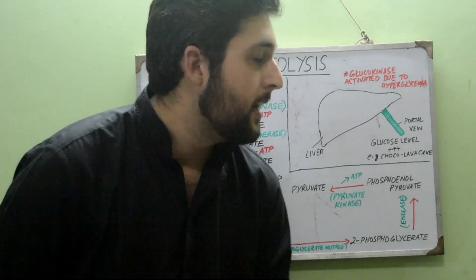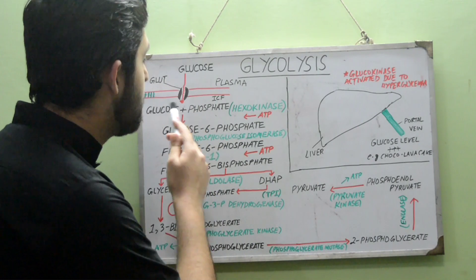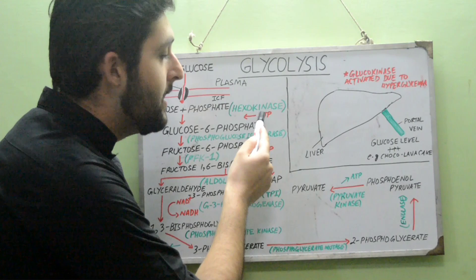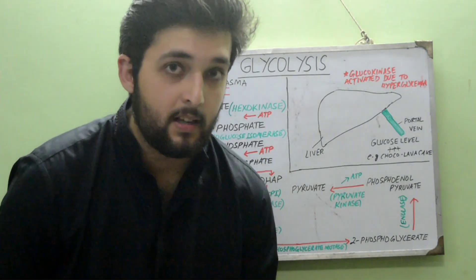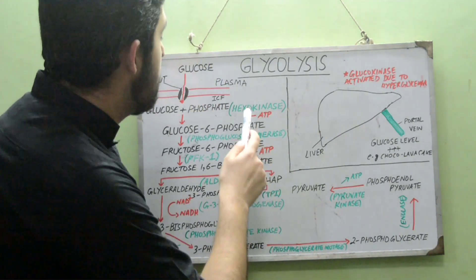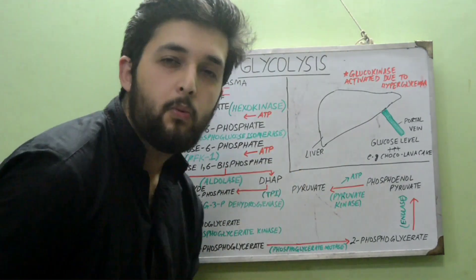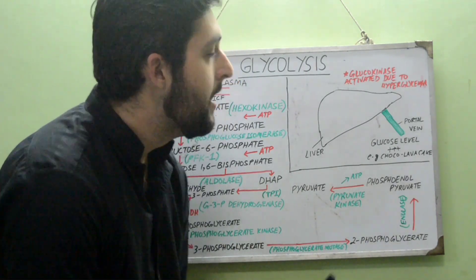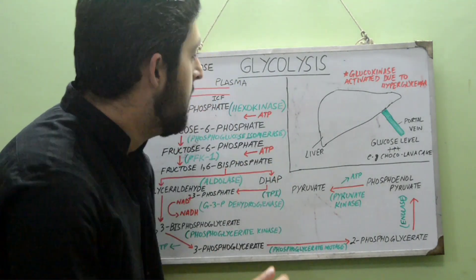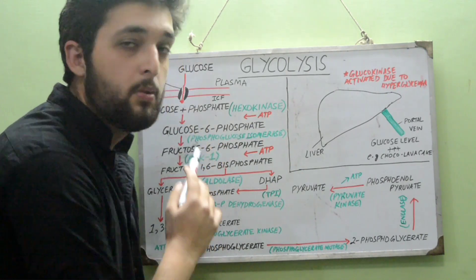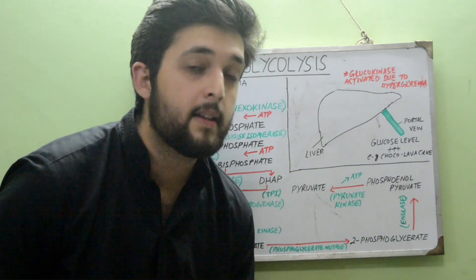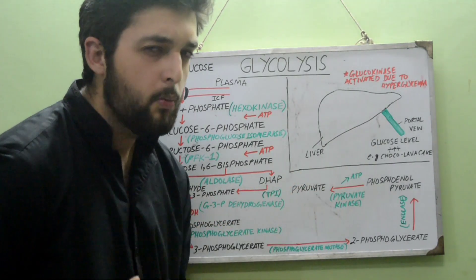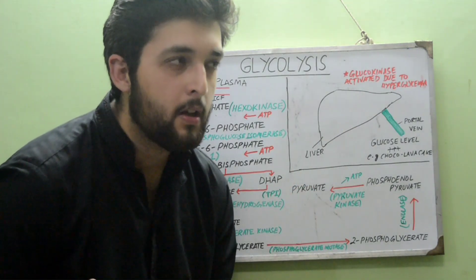Once glucose is inside the cell, it is phosphorylated using ATP as the energy currency. One phosphate is removed from ATP, converting it to ADP, and that phosphate is transferred to glucose to form glucose-6-phosphate.